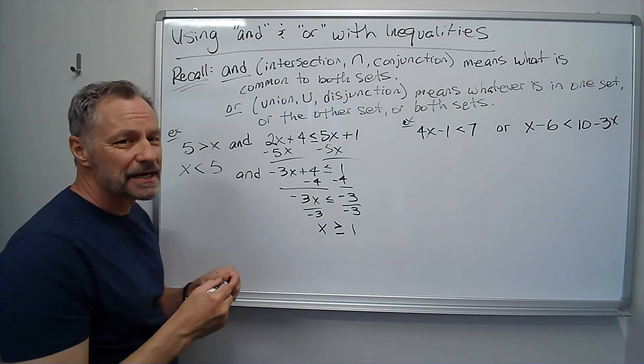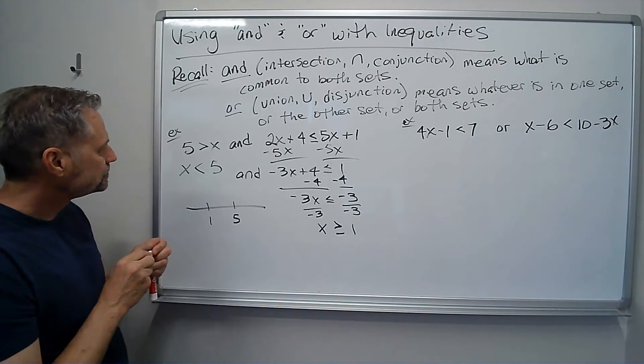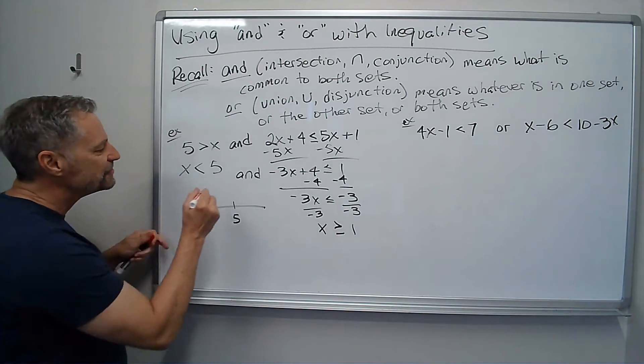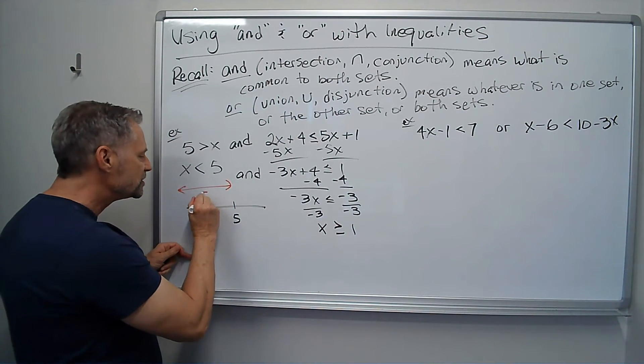Let's graph those both on a number line and see what's happening. First of all, make sure you put them in the right order. My x less than 5 goes this way.